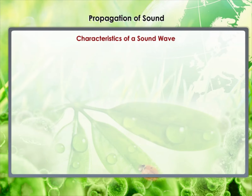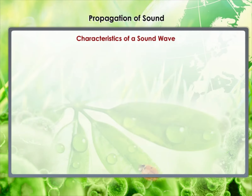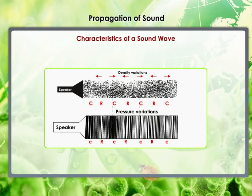Characteristics of a Sound Wave. We can describe a sound wave by its frequency, amplitude and speed. A sound wave in graphic form represents how density and pressure change when the sound wave moves in the medium. The density as well as the pressure of the medium at a given time varies with distance — above and below the average value. Compressions and rarefactions are represented in the figure as the sound wave propagates in the medium.